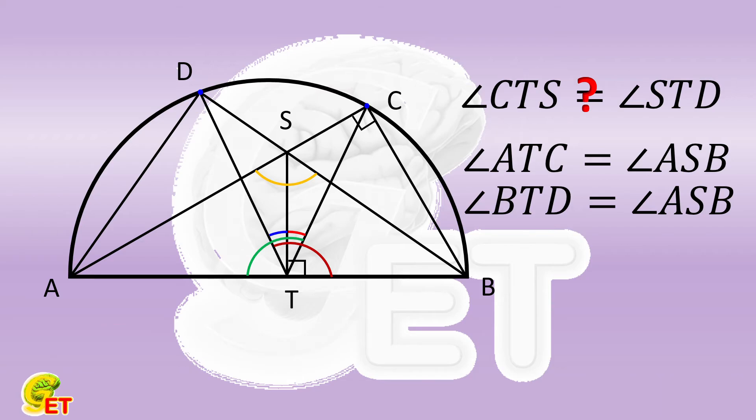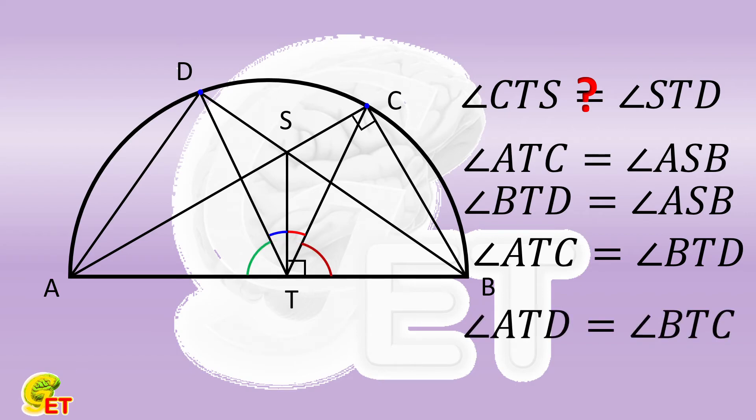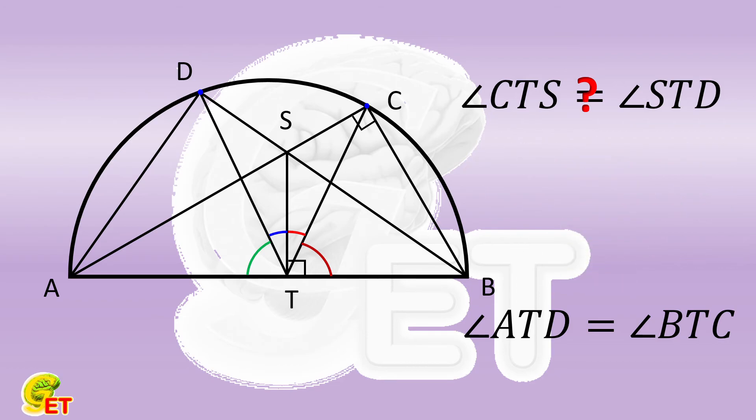So angle ATC and angle BTD are equal. Subtracting an identical part, the angle CTD, we get that the angle ATD is equal to the angle BTC. The complementary angles of these two equal angles are equal, so it is not that sophisticated to prove the angle CTS is equal to the angle STD.